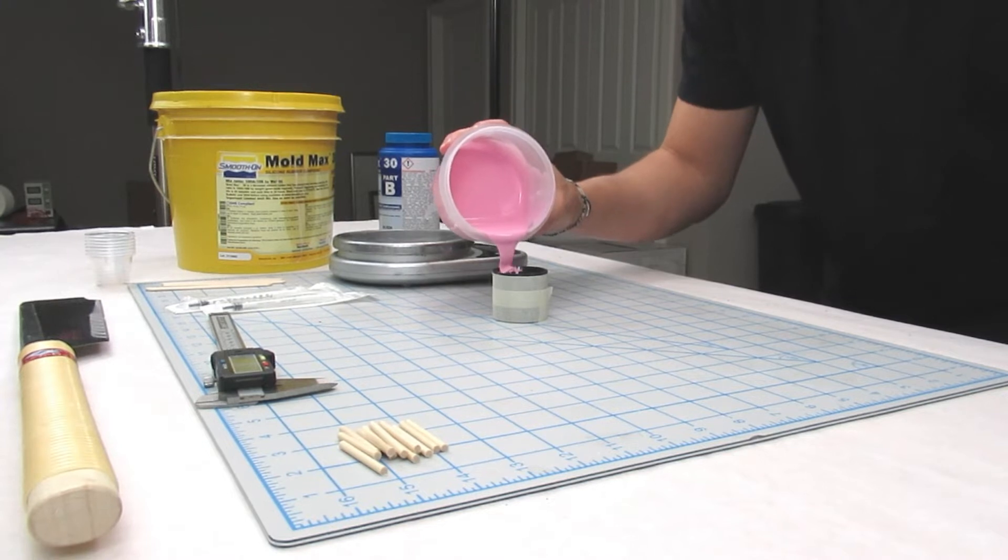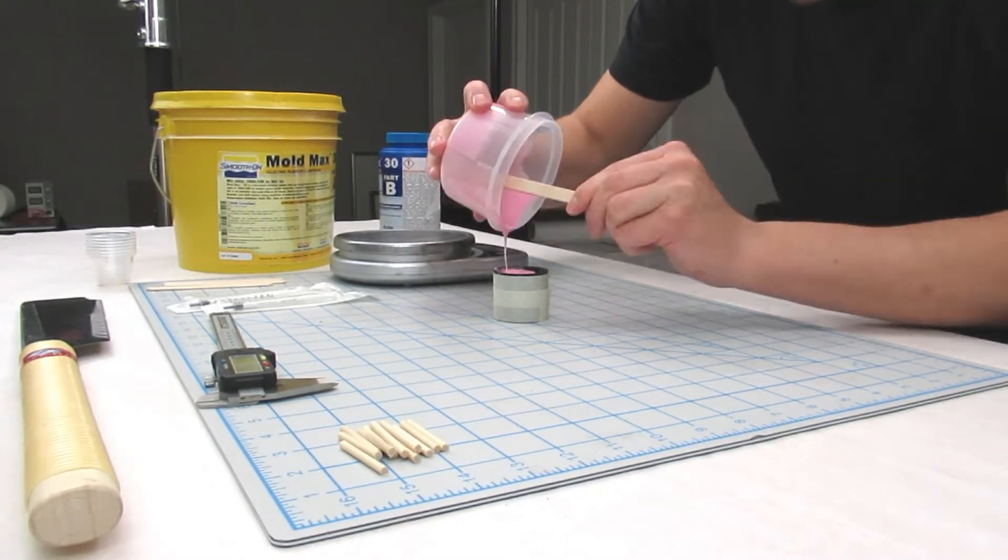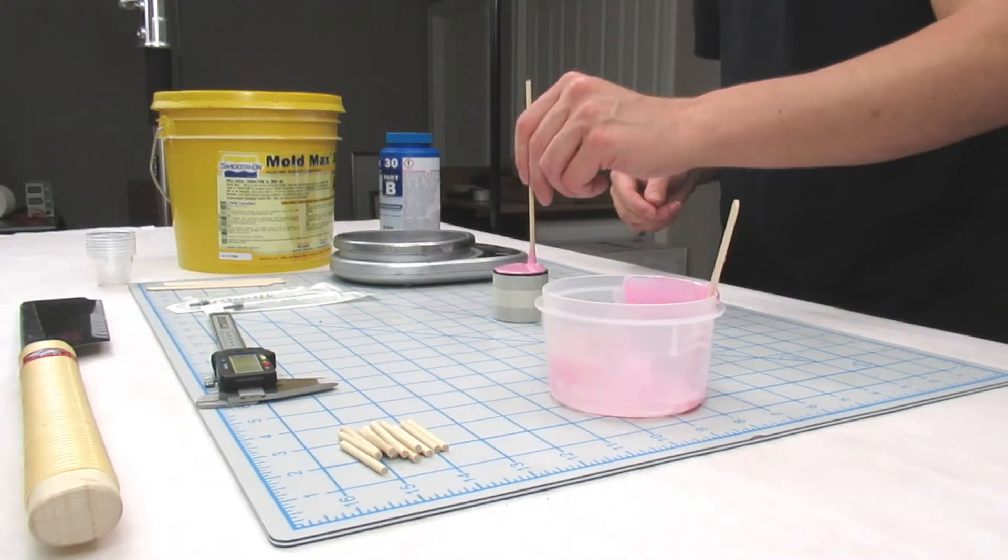Now I slowly pour the silicone in. I make sure to scrape the sides. I had barely just enough.